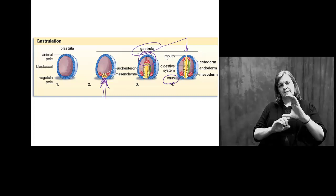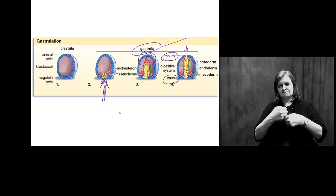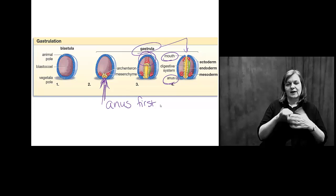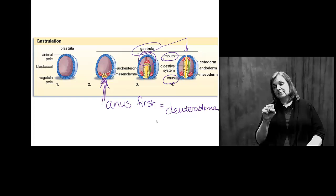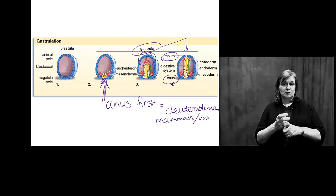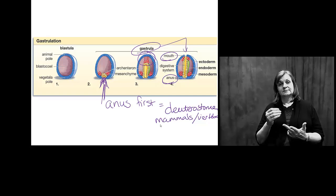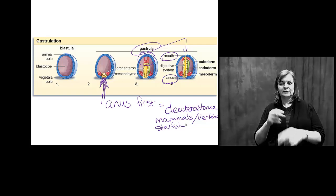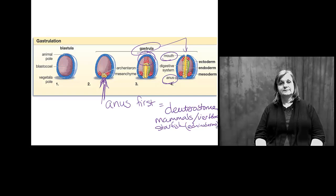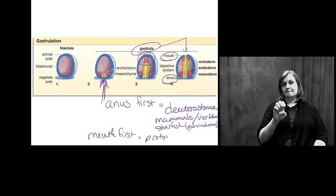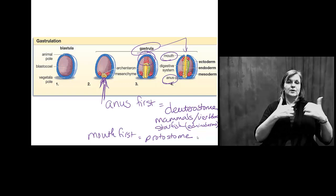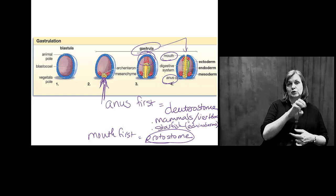The anus is labeled at the bottom and the mouth at the top, suggesting that this folding in forms the anus first. This is actually something known as a deuterostome. In the animal kingdom, deuterostomes are mammals, vertebrates, and starfish — also known as echinoderms. That doesn't have to occur, though. We can actually form the mouth first in something known as a protostome. Protostomes are all other animals, so if you're not a person or a starfish, you're a protostome. We'll look at those differences more when we talk about animal evolution.